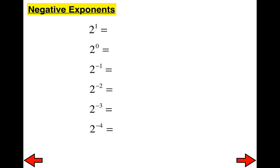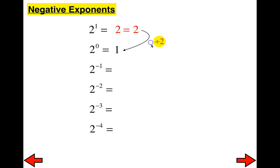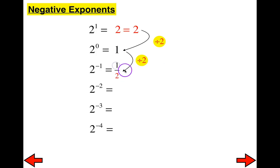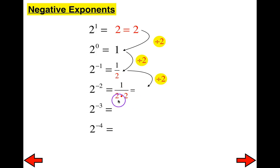Now let's move on to negative exponents. I'll start with positive exponents and continue the pattern from earlier. Two to the first is two, two to the zero is one — determined by dividing by two. Continuing that pattern: two to the negative first, I divide by two, which gives one-half. Two to the negative second means dividing by two again — one over two times two. Two to the negative third gives one over two times two times two, which is one-eighth. And two to the negative fourth gives one over sixteen.